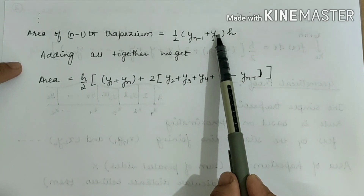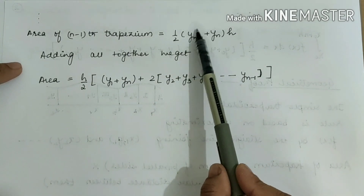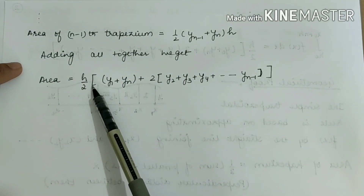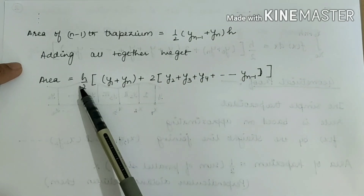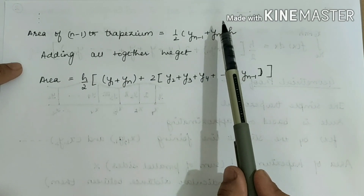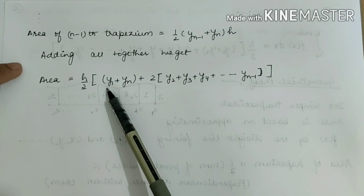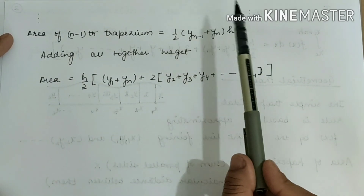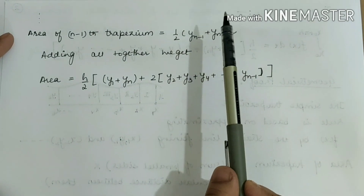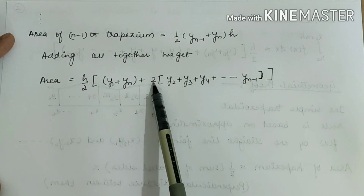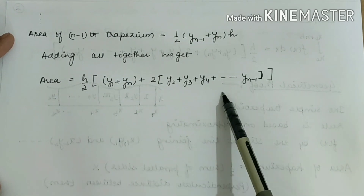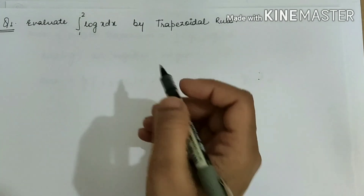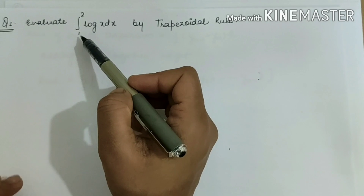Similarly for the second, third, and up to the (n−1)th trapezium, it becomes (1/2)(y(n-1) + yn) × h. When we add all these together, all values from y2 to y(n-1) appear twice, while y1 and yn appear only once. That is why y1 + yn appears once and the remaining terms are multiplied by 2. Taking h/2 as common gives the formula: Area = (h/2)[y1 + yn + 2(y2 + y3 + ... + y(n-1))]. This is why it is sometimes called the Trapezium Rule.